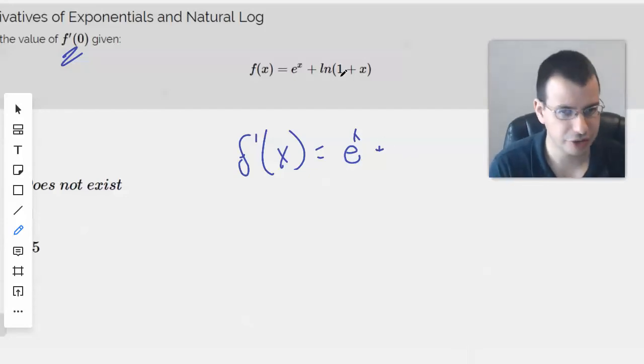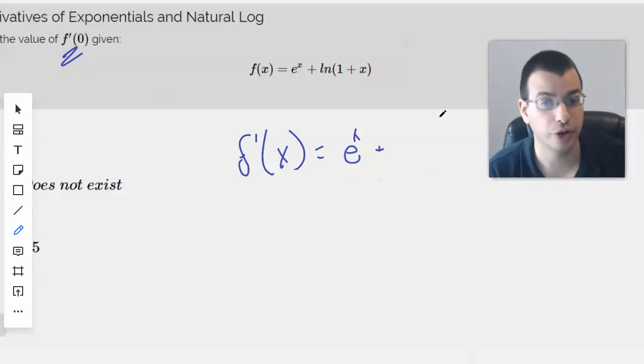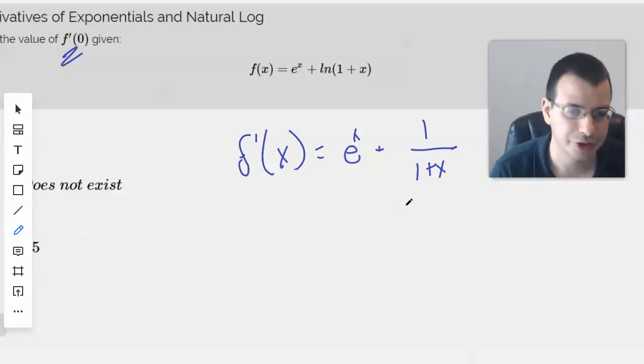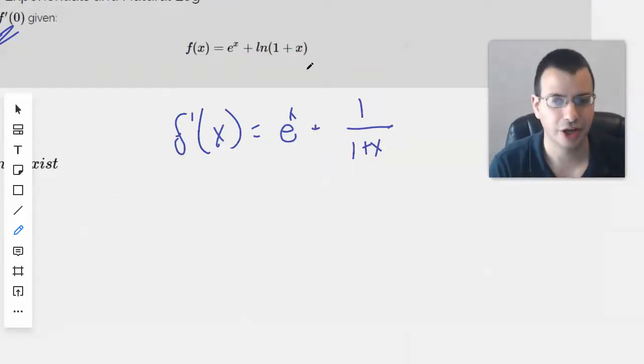The derivative of ln(x) is 1/x. So what we'll do here is the chain rule: 1/(1+x) times the derivative of (1+x), which is just 1. So the derivative of ln(1+x) is just 1/(1+x).